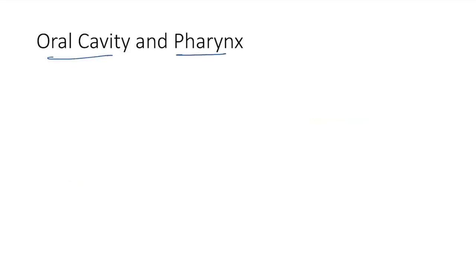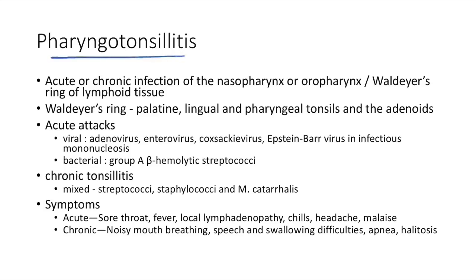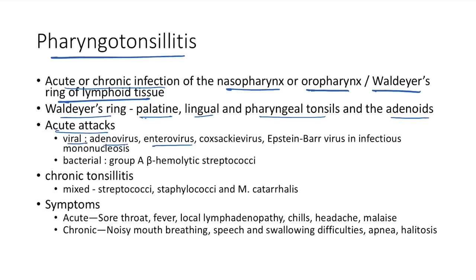Diseases of oral cavity and pharynx: pharyngotonsillitis is acute or chronic infection of the nasopharynx or oropharynx and Waldeyer's ring of lymphoid tissue. Components of Waldeyer's ring: palatine tonsil, lingual tonsil, pharyngeal tonsils, and adenoids. Acute pharyngotonsillitis is usually caused by viruses like adenovirus, enterovirus, Coxsackievirus, Epstein-Barr virus. Bacterial causes include group A beta-hemolytic Streptococci. Chronic tonsillitis is a mixed infection caused by Streptococci, Staphylococci, and Moraxella catarrhalis.